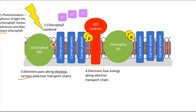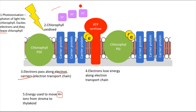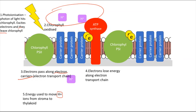As the electrons pass through the electron carriers, they lose energy. From the chlorophyll they had high energy, but as they move along the electron transport chain they lose energy. The energy that's lost is used to move H+ ions — which are located in the stroma, outside the thylakoid — from the stroma into the thylakoid space.